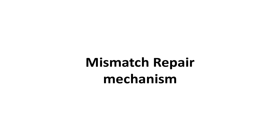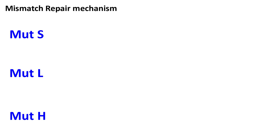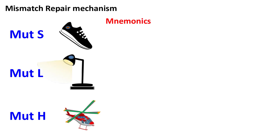Let's see the mechanism of mismatch repair in detail. The proteins involved in mismatch repair are MUT-S, MUT-L, and MUT-H. A simple mnemonic to remember these proteins is MUT-S for shoes, MUT-L for lamp, and MUT-H for helicopter.